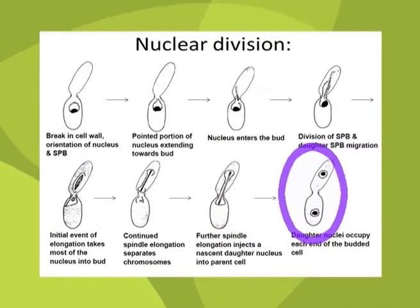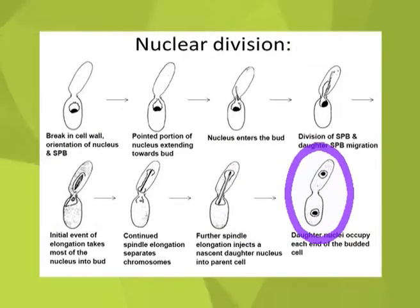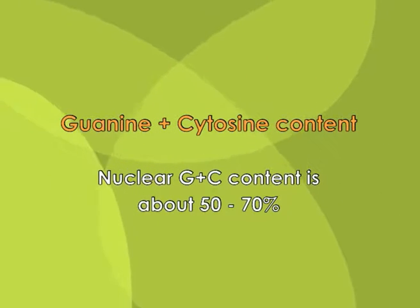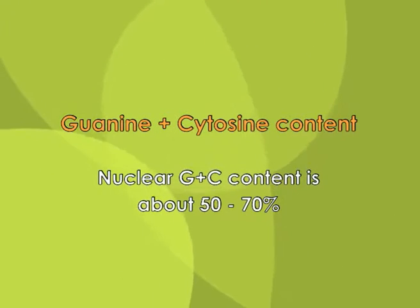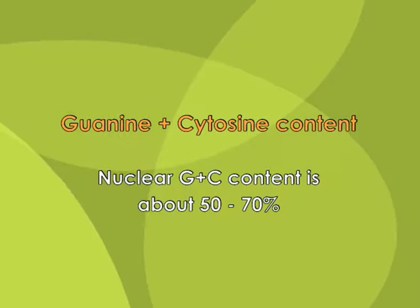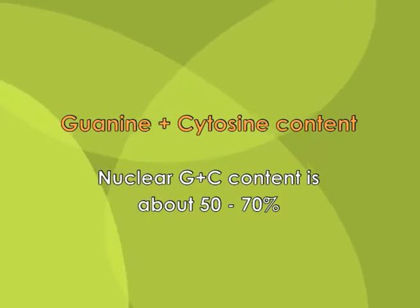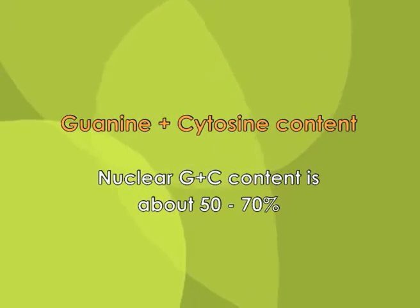Nuclear guanine plus cytosine content usually ranges between 50 to 70 percent, but the average is always above 50 percent.